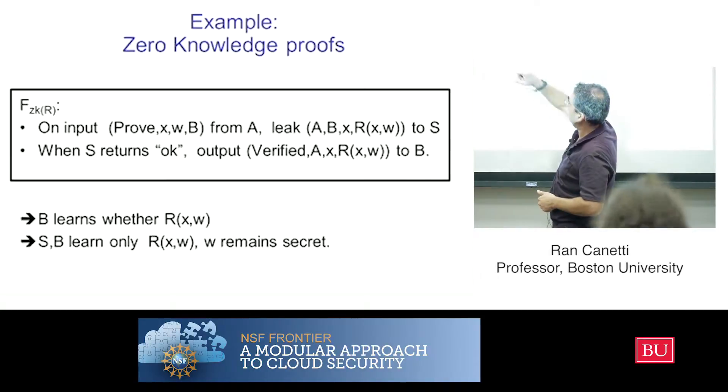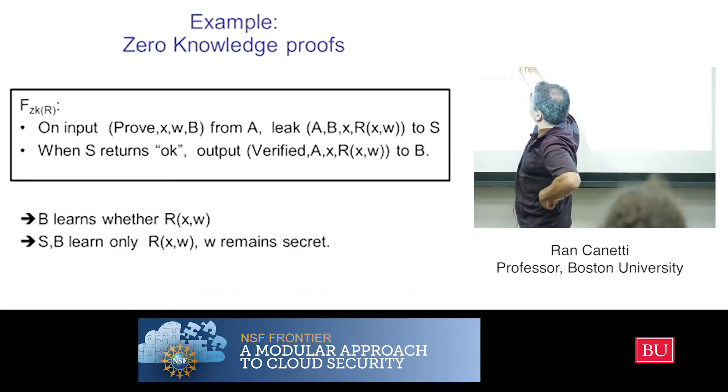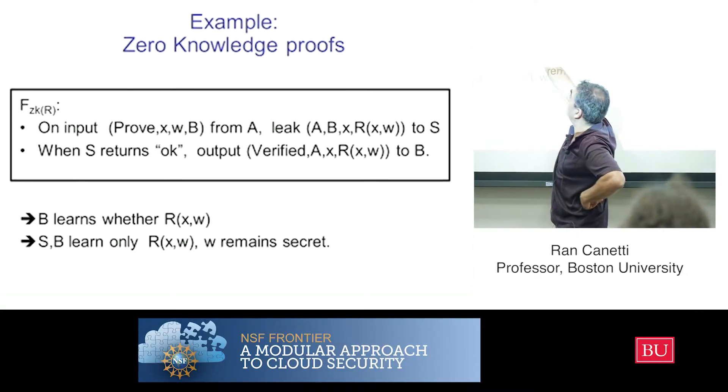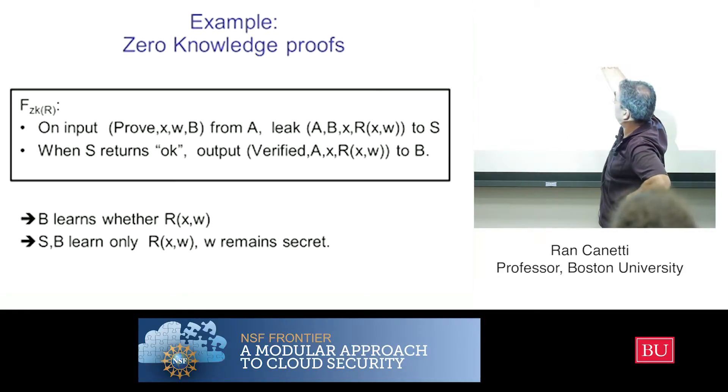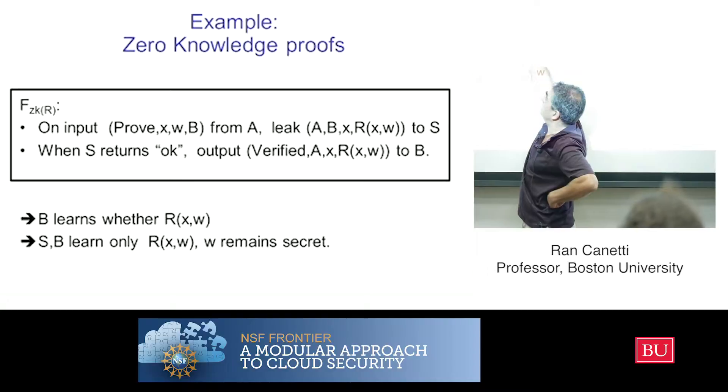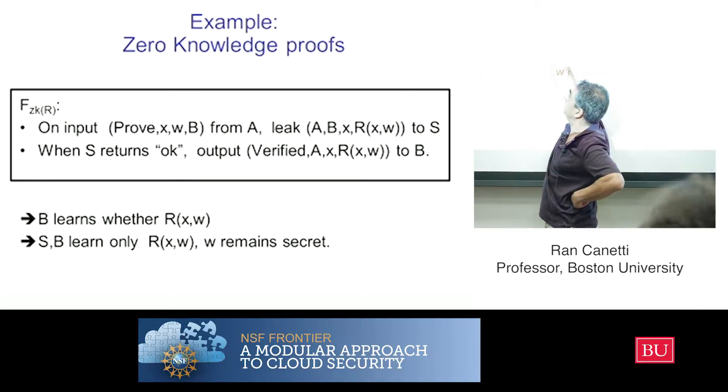And so the prover has an x and a w. And it now, in the functionality, wants to prove to B that it has a w that satisfies the relation with x. But it doesn't want to reveal w to B. In fact, it doesn't want to reveal anything to B except for the fact that it has such a w—this one bit fact.